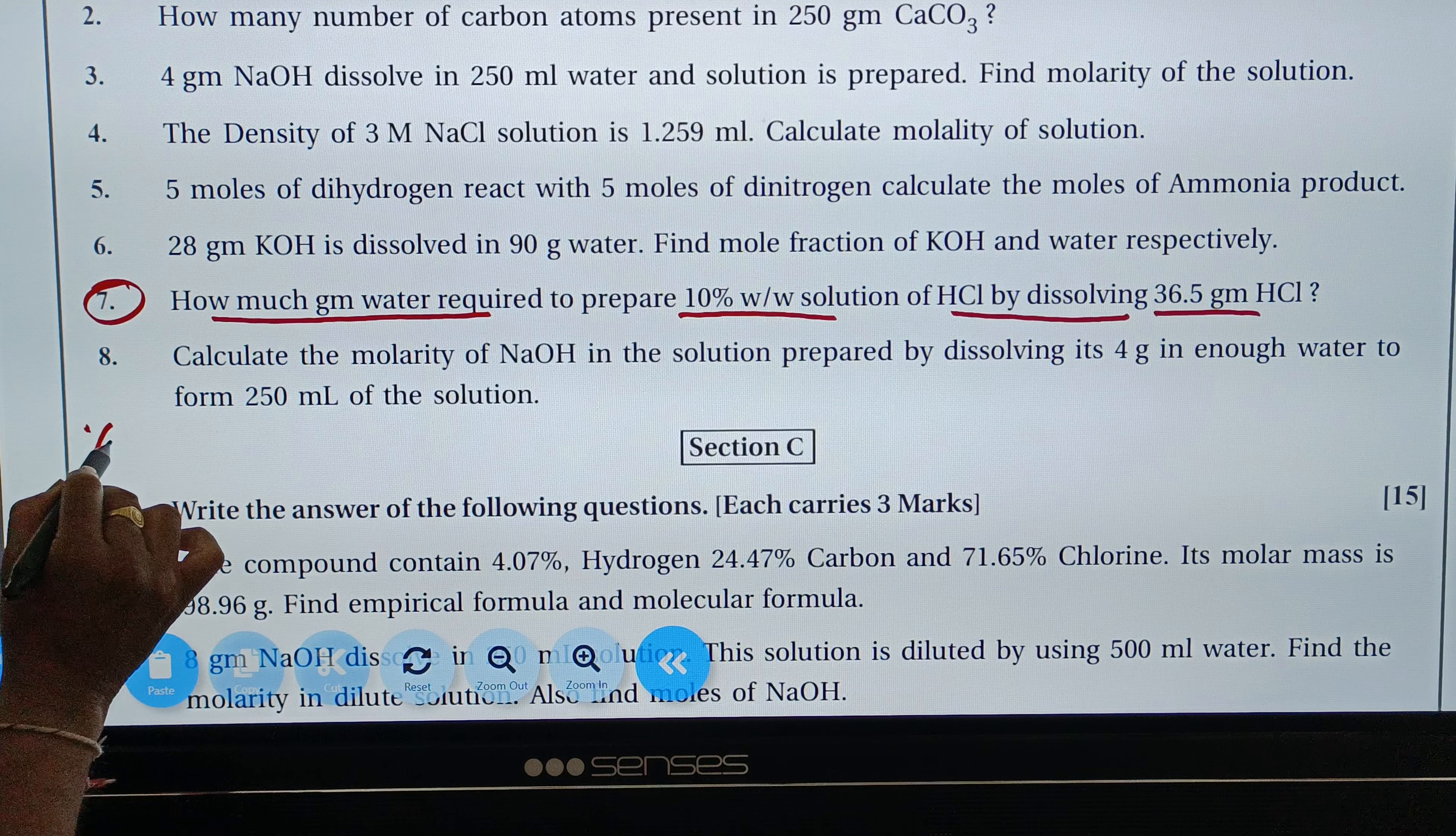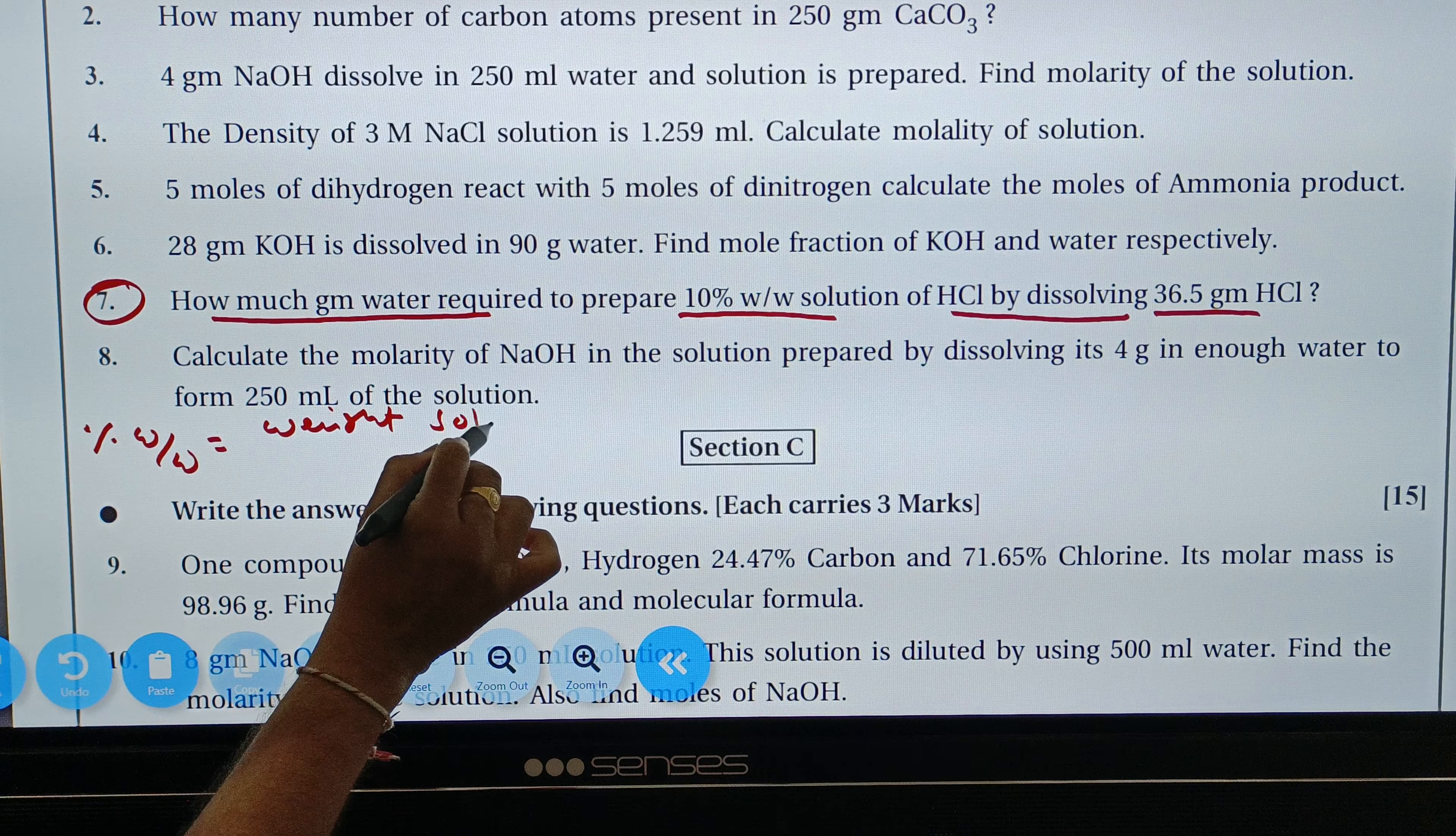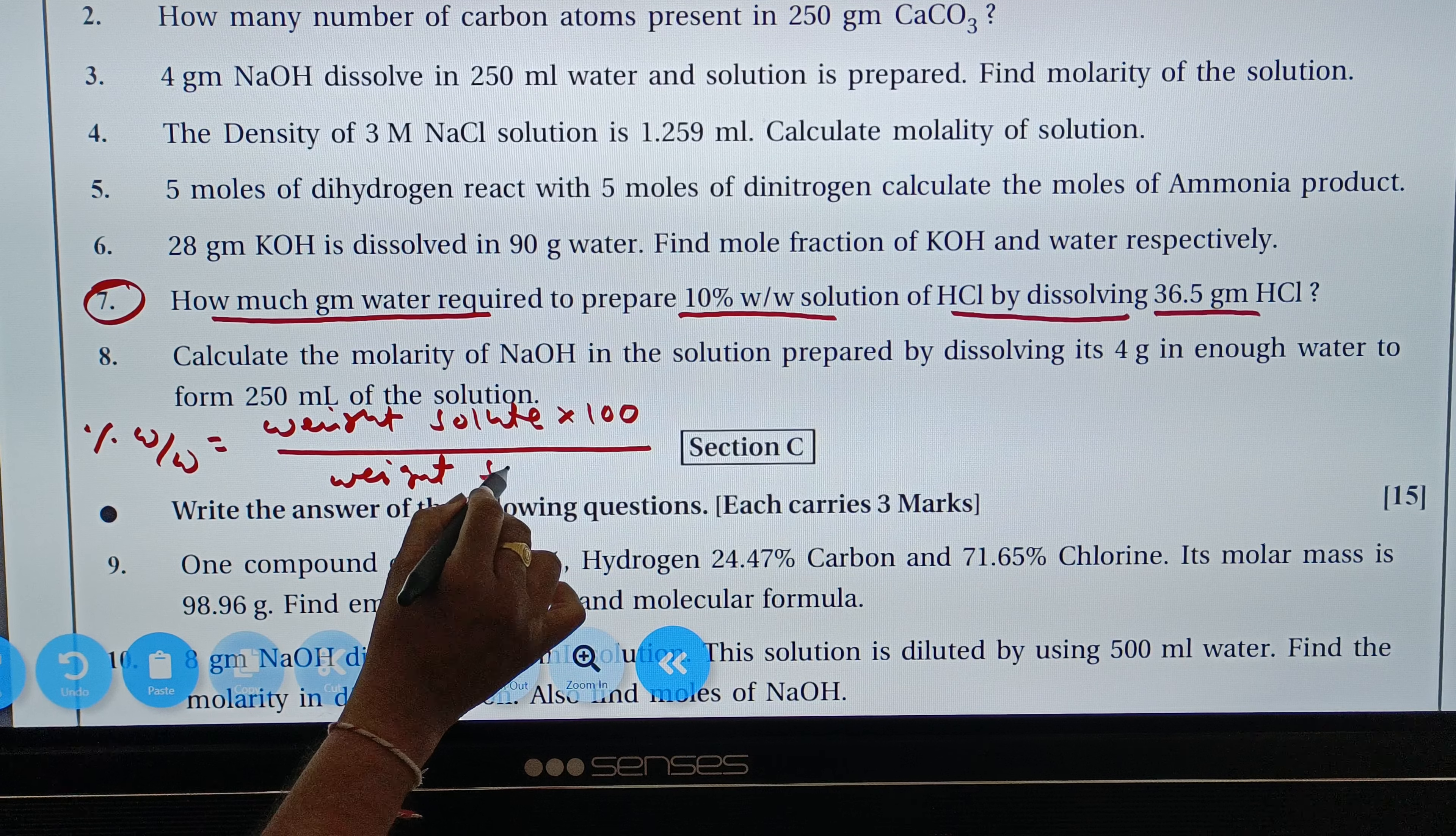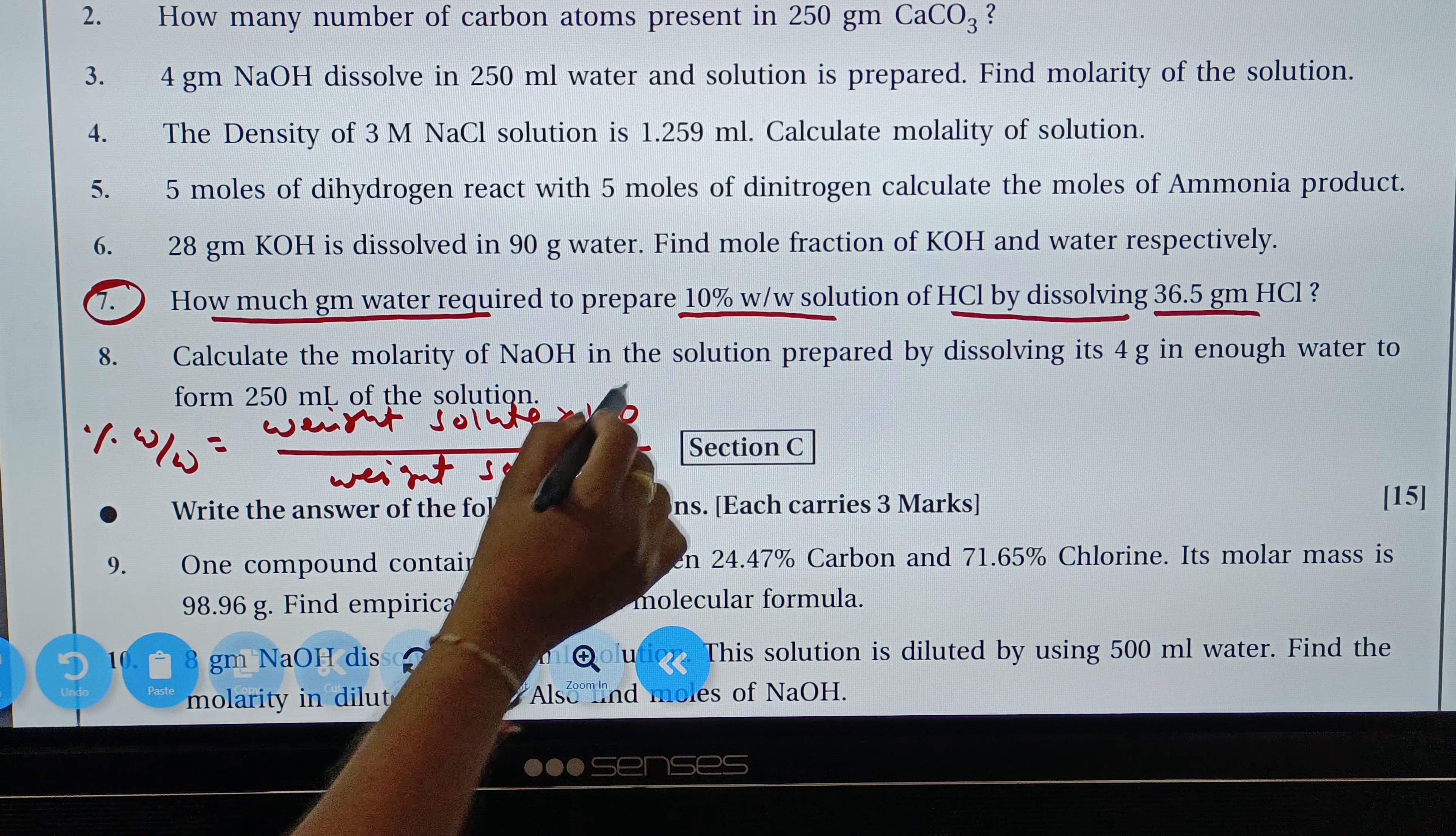Formula: percentage w/w is equal to weight of solute times 100 divided by weight of solution. So percentage w/w is equal to weight.